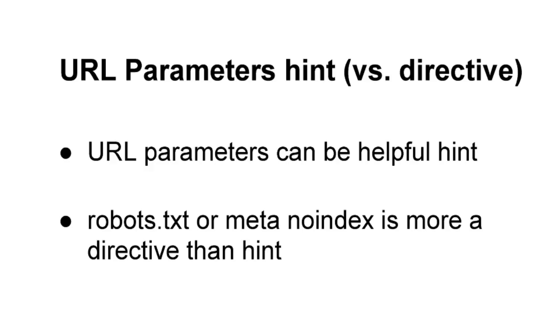But for those of you who don't have that message, please keep watching. One of the main takeaways is that improper actions on the URL parameters feature can result in pages no longer appearing in search. Again, it's an advanced feature. The settings in URL parameters are used by Google as a helpful hint in our crawling process. For stronger directives, you'll want to use things like a robots.txt disallow or a meta noindex. But using the URL parameters hint is still very helpful.